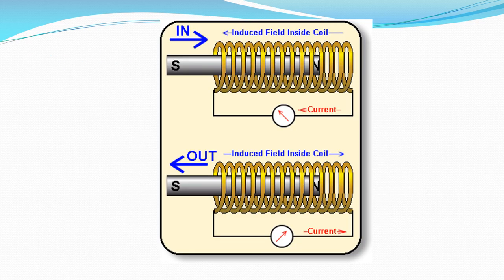Here's the same scenario shown a bit differently. The solenoid wires are here, and we have a magnet moving in. It's going to induce a magnetic field that opposes what's happening. Essentially the north of the solenoid ends up facing the incoming magnet when it's going in, and the opposite happens when it's going out.